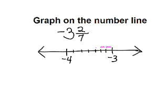2, 3, 4, 5, 6, 7 regions between negative 3 and negative 4, and those are sevenths.